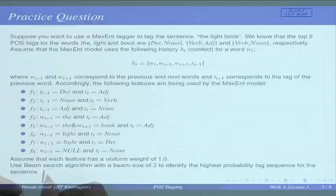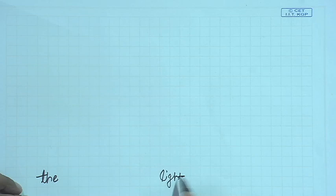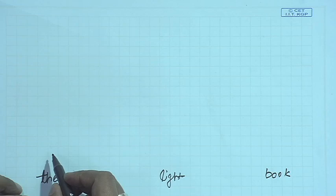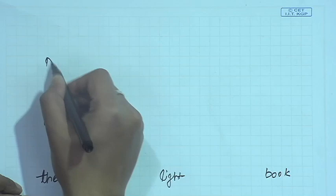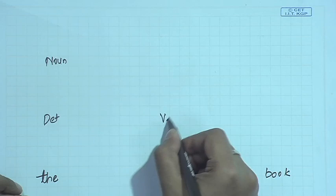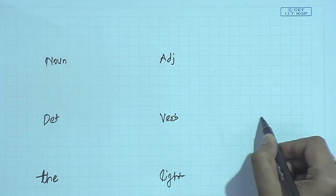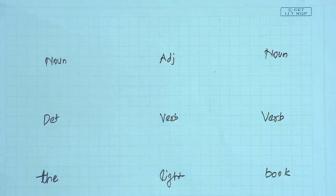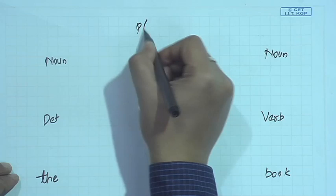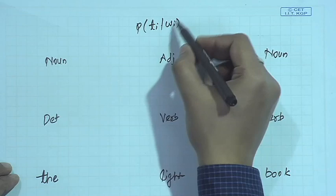We have three words in the sentence: 'the', 'light', and 'book'. The word 'the' can be a determiner or a noun; 'light' can be a verb or an adjective; and 'book' can be a verb or a noun. We need to compute the probability of a tag given the context x_i or h_i — different notations — where the context is w_{i-1}, w_i, w_{i+1}, and the previous tag.